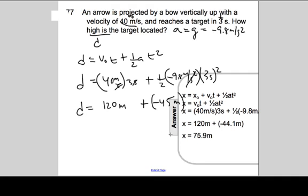So that arrow would have a vertical displacement of positive 75.9 meters.